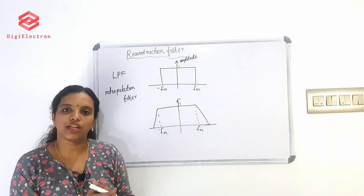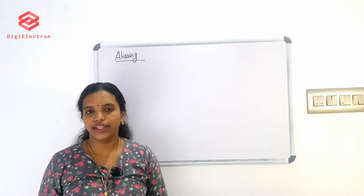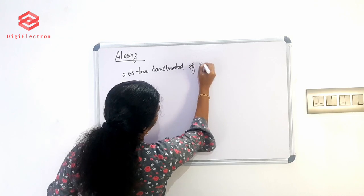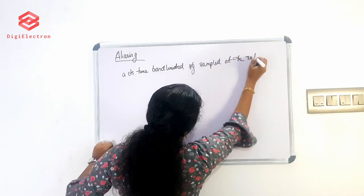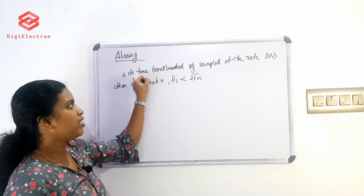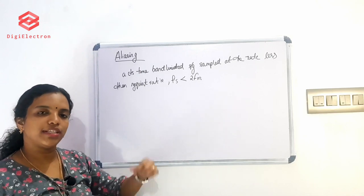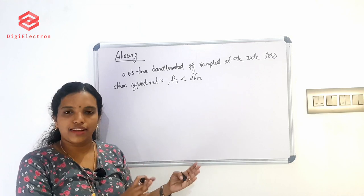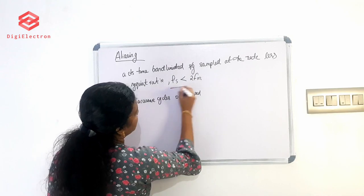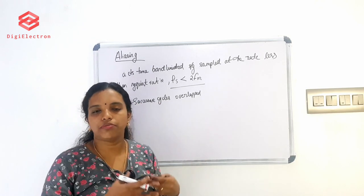In summary, we have the original signal, the sampled signal, and then the low-pass filter applied. The next topic is aliasing. Aliasing occurs when a continuous time band-limited signal is sampled at a rate less than the Nyquist rate, that is Fs < 2Fm. When the sampling frequency is less than 2Fm, we have successive spectral cycles that overlap.